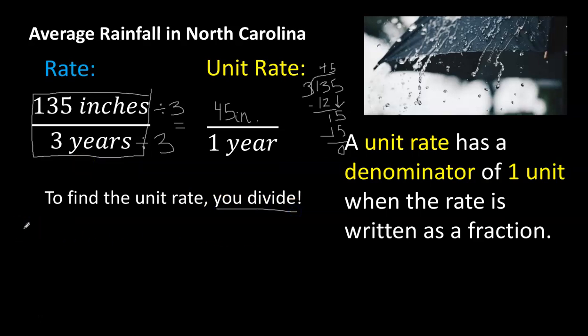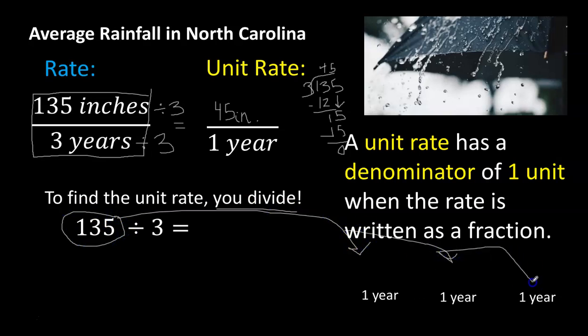To find unit rate, the shortcut is to divide. So we take 135 and divide it amongst those three years. Let's think about that more deeply. If you take the 135 inches and you divide it amongst the three years, you would give 45 inches of rain to each year. There would be 45 inches of rain per year.